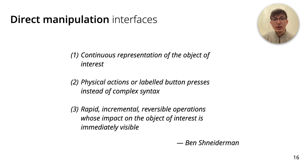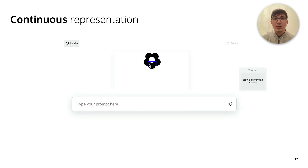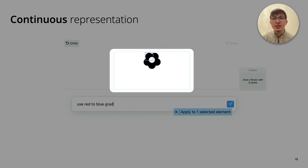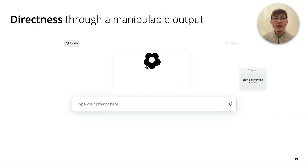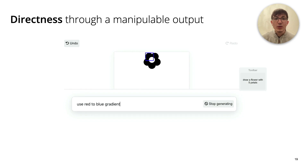Drawing upon these guidelines, we developed DirectGPT, a prototype system that exemplifies how the principles of direct manipulation can help interact with large language models. In DirectGPT, the generated output is continuously represented in its final form of interest, and the output is manipulable to localize the effect of a prompt. So, for example, after selecting a petal, the prompt will modify only that petal.